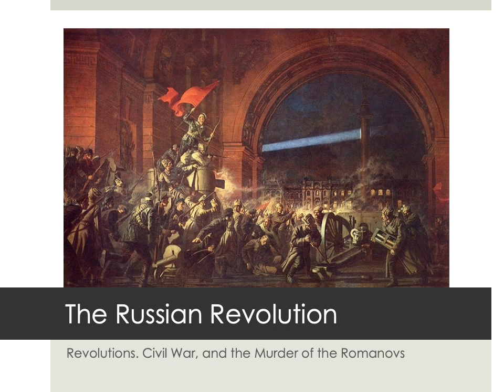Hello and welcome to our second online lesson. Hopefully by now everyone has had a chance to watch the previous PowerPoint on the underlying causes of the Russian Revolution. Just to recap real quick, in that lesson we learned about how a series of poor decisions by the Tsar and those governing under him, as well as a few other uncontrollable events, ultimately led to two very serious consequences: a huge increase in social unrest, particularly in the number of protests and strikes occurring across Russia, and a general loss in faith in the Tsar's ability to govern.